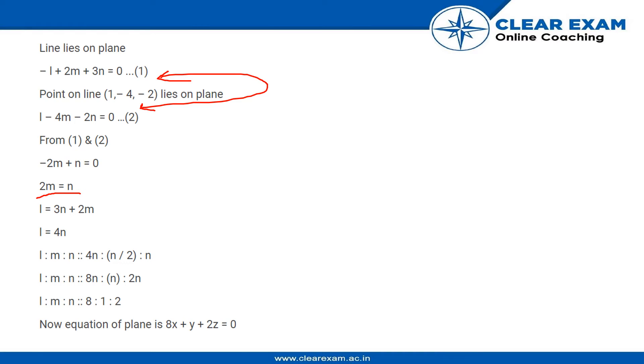and also we need L in terms of N. So we put 2M equal to N in the first case and get L is equal to 4N. Now we need the ratio in order to find the direction ratios for